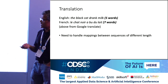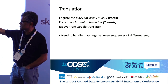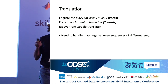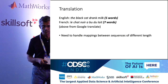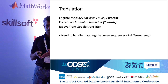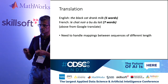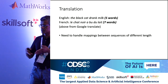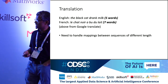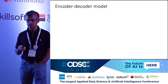Now let's think about the application for translation. Taking a more complicated example: 'The black cat drank milk,' which is five words, and the equivalent French 'Le chat noir a bu du lait,' which is seven words. The problem is that with a basic recurrent neural network, it's not easy to produce seven words when you have five words coming in — we had one word coming out from each input word, so it's like one-to-one mapping. How do we handle something like this? We need a different model: the encoder-decoder model.